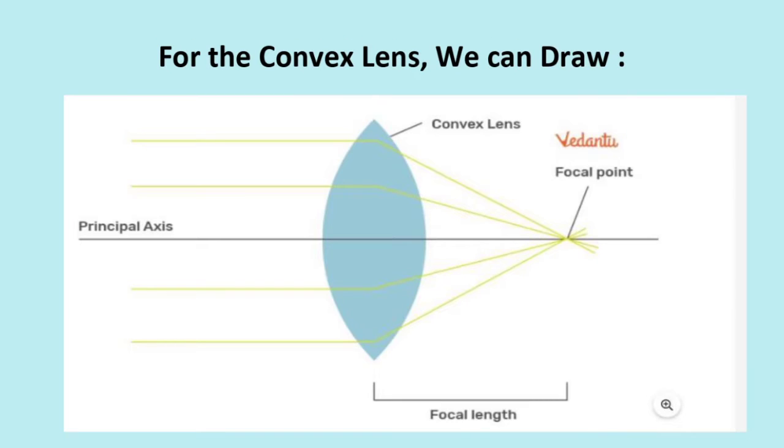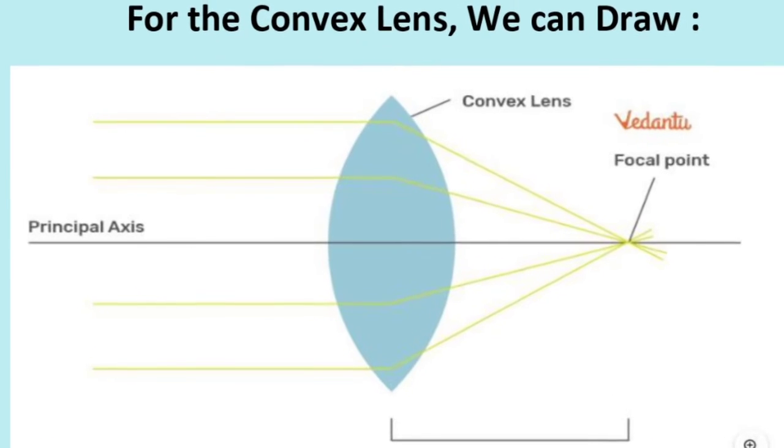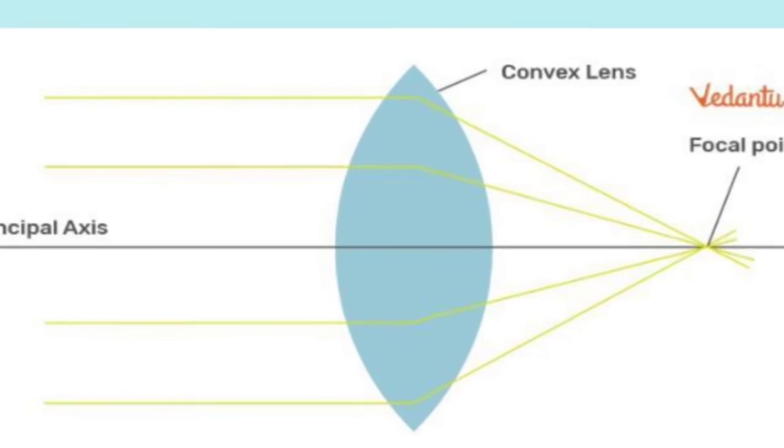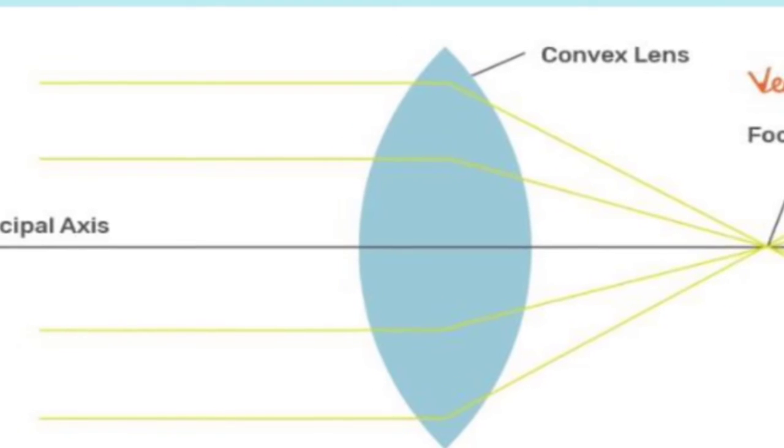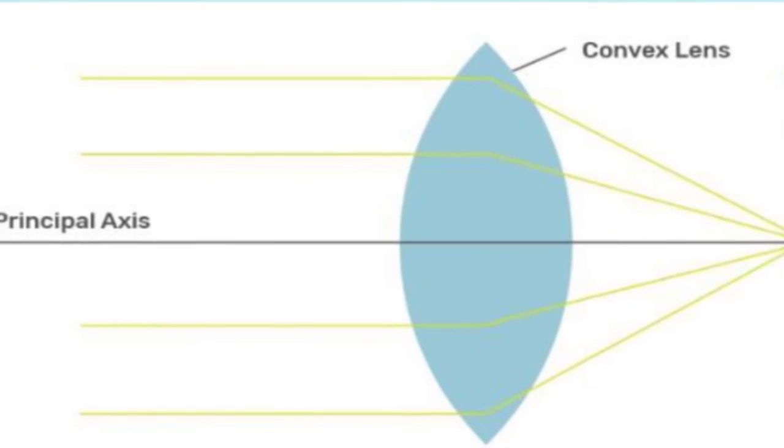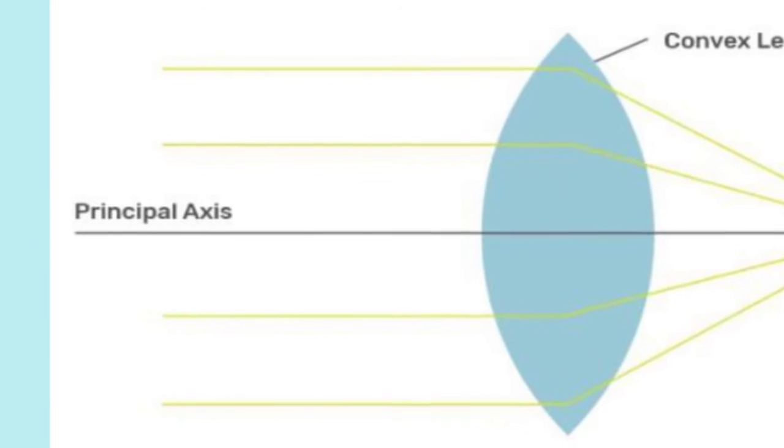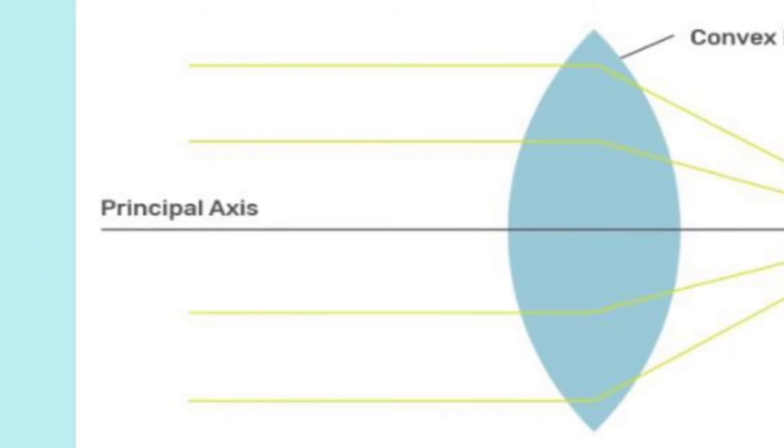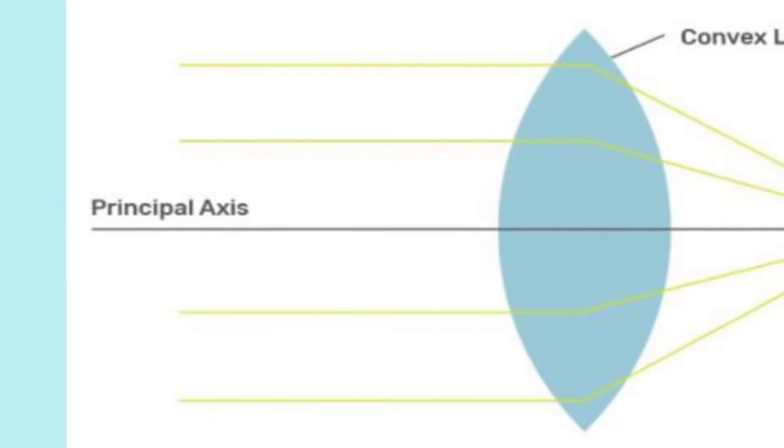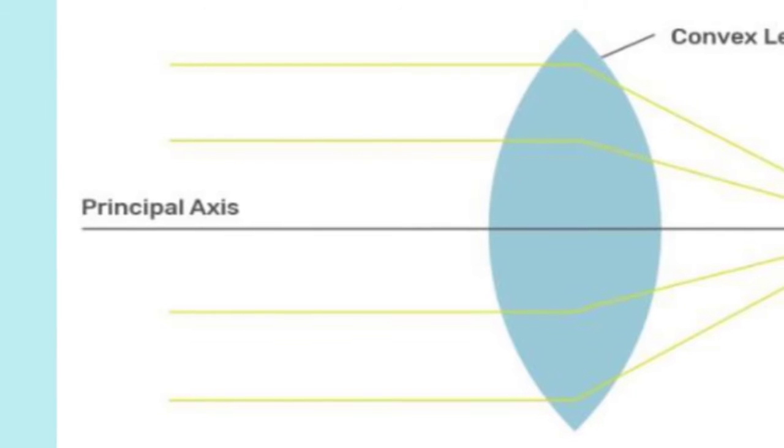This is the ray diagram that is mostly used from the textbooks, but first we are going to know about the important parts that we must be aware of. In the middle we can see the converging or convex lens. The center line is called principal axis.